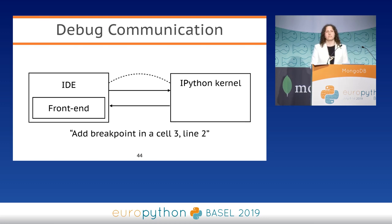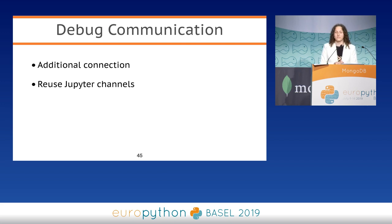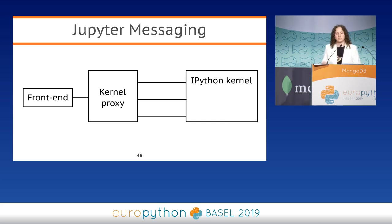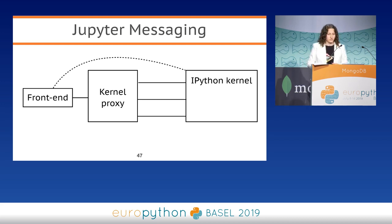There are two possible solutions: the first is to establish an additional connection to IPython kernel, and the second is to reuse existing Jupyter channels. The first is simpler, but it has limitations due to Jupyter architecture. When a frontend connects to IPython kernel, it doesn't connect directly — it connects via a kernel proxy, which connects to IPython kernel via web sockets. So if you want to avoid Jupyter messaging architecture, you can establish only one direct socket connection to the IPython kernel. But it isn't always possible — for example, if your kernel is located in a cloud, you can't connect to it without the proxy.